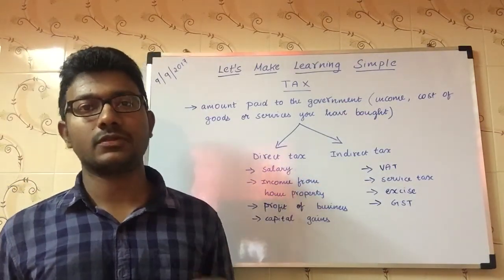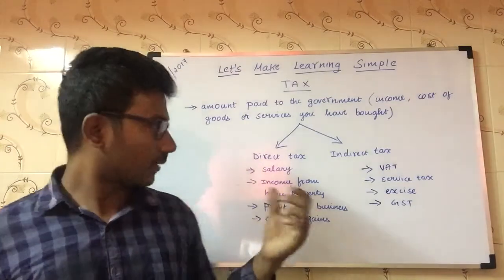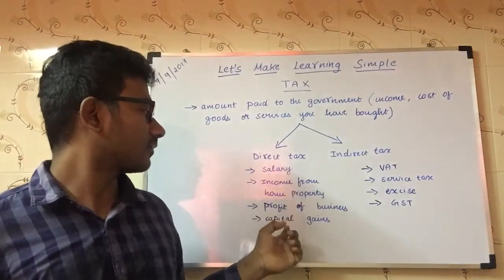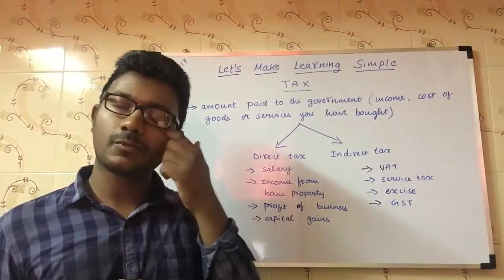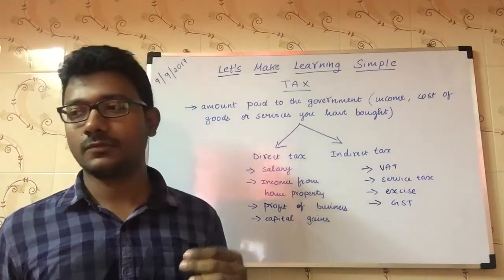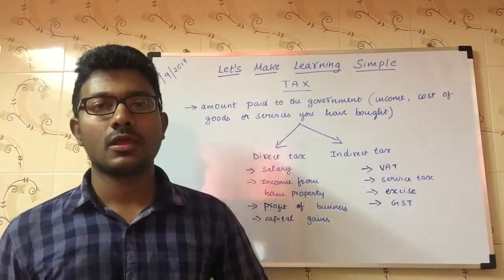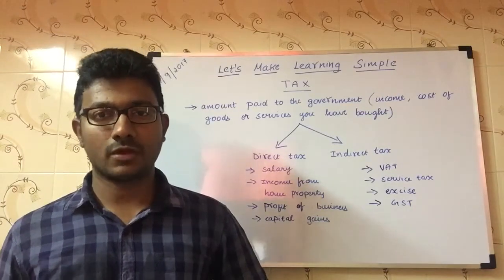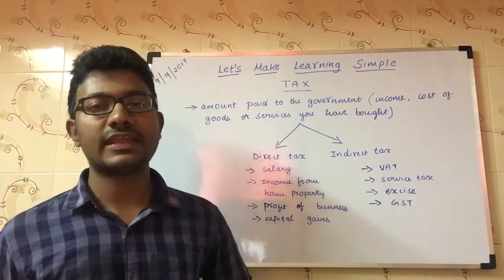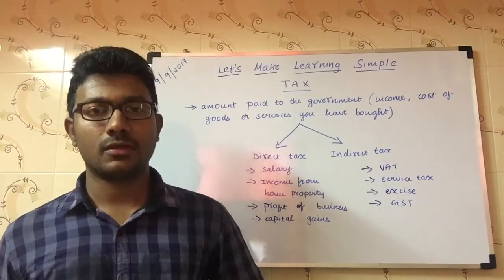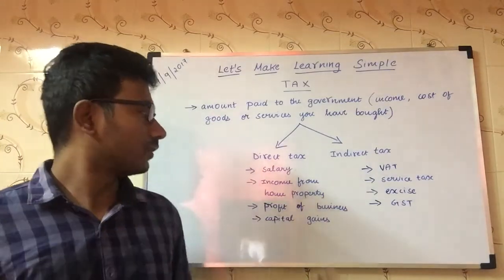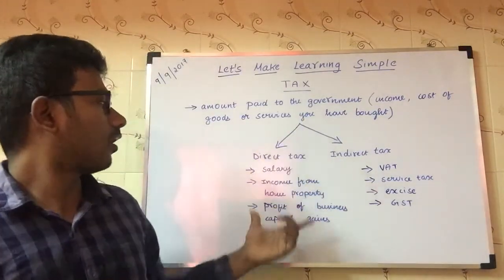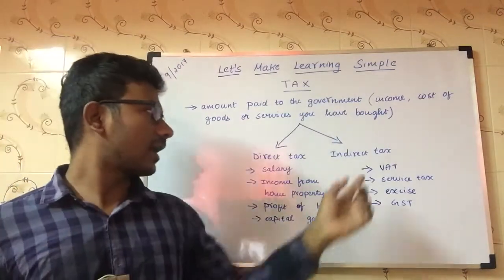Profit from a business also falls under direct tax — if you are running a business and you get some profit, you need to pay some part of that profit to the government as tax. Similarly, capital gains — if you are doing stock market investments or investing in mutual funds and you sell those within a year and get a profit, you need to pay some amount to the government. All these fall under direct tax.